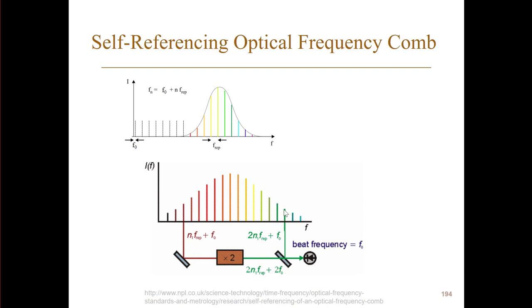But if we look at this frequency over here, which is roughly—or rather it's exactly twice as high—so it's two times n1 times f-rep plus the same f-zero, this f-zero over here.